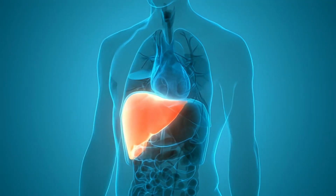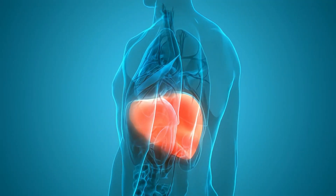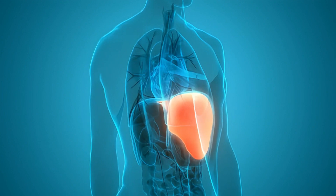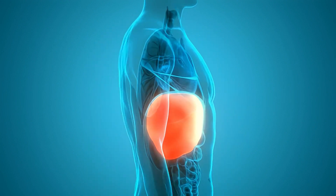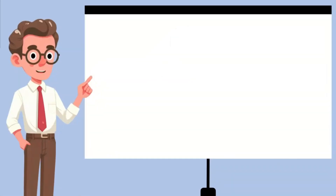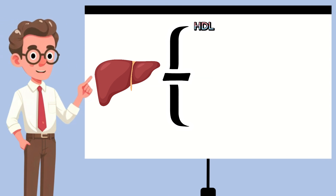Cholesterol is a vital substance produced primarily in your liver. The liver produces two types of cholesterol: first, HDL or high-density lipoprotein, and second, LDL or low-density lipoprotein.